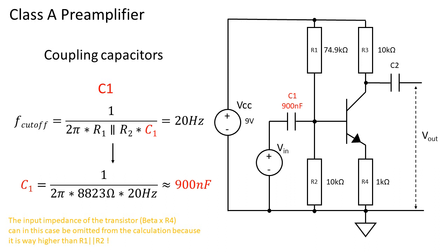Rewriting the formula for C1 gives us C1 equals 1 over 2 pi times R1 parallel to R2 times F cutoff. We want our lower cutoff to be 20 Hz so the value of C1 will be about 900 nF.